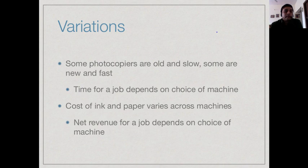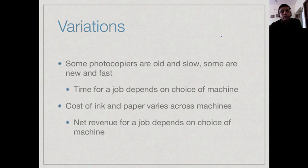The other factor is that the cost of doing something varies across machines. Using a machine consumes resources — ink, paper, electricity — and this cost may vary from one machine to another. So if we split a job across machines, it might not only take more or less time, it may also cost the shop more or less. The actual revenue the shop realizes may therefore be more or less depending on which machine it chooses.